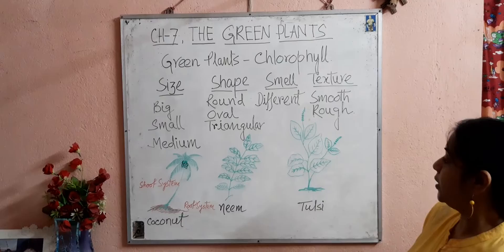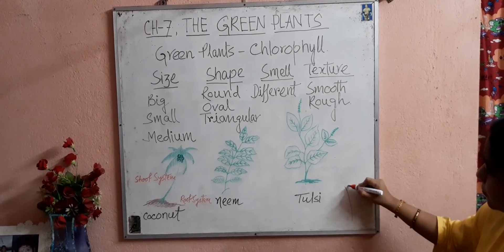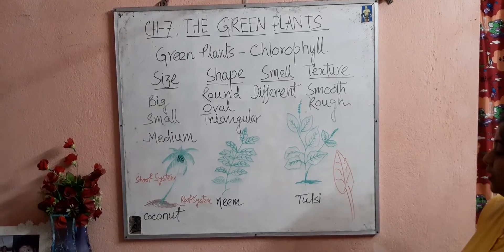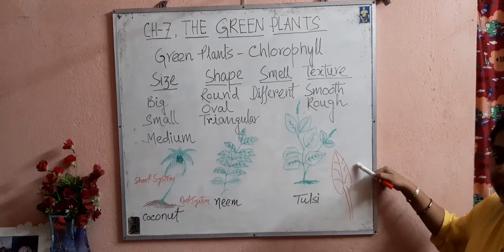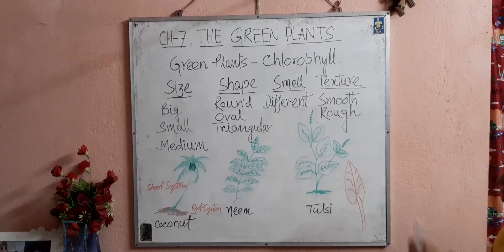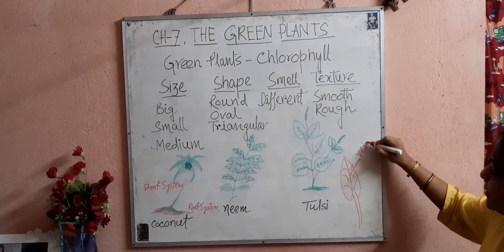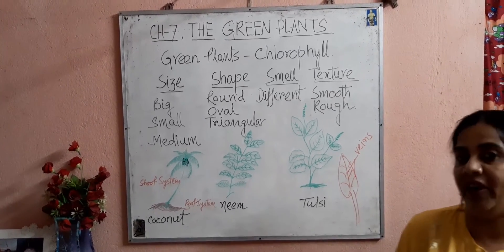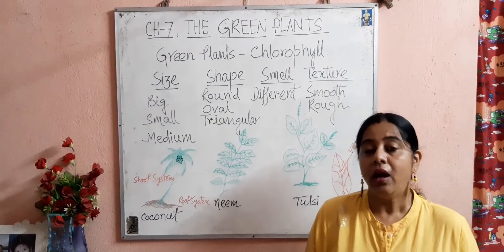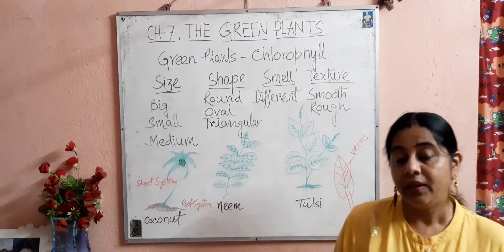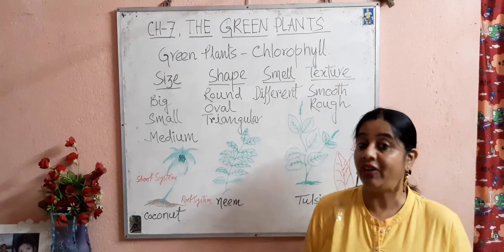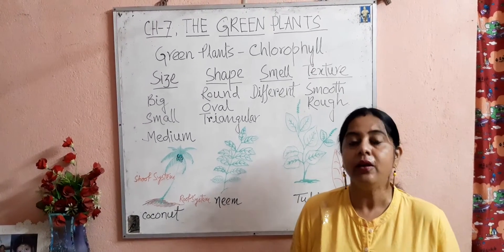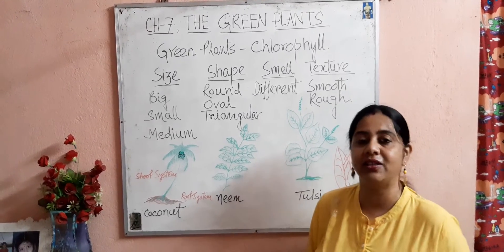Suppose here I draw a leaf. These are the veins of the leaves. If you see the arrangement of the patterns of veins, these arrangements are different in different leaves. This is the main vein and these are the side veins. The arrangement of veins in different leaves is also different. So children, you can see that the size, shape, smell, texture, and the arrangement of the patterns of veins are different in different leaves of different plants.